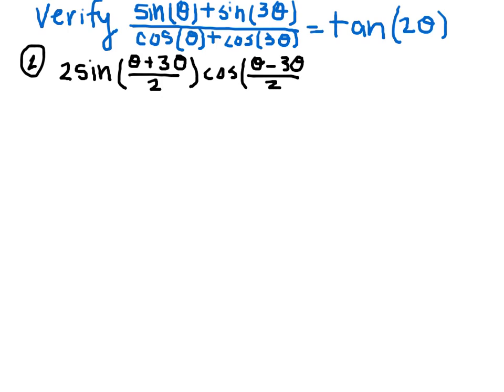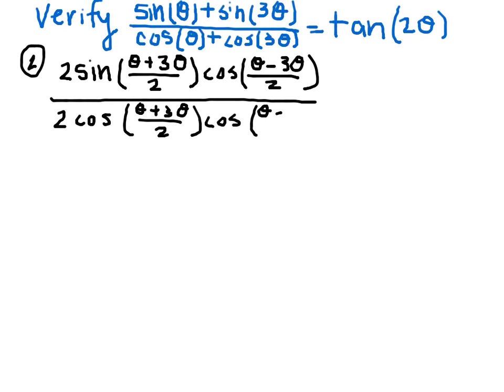divided by 2. That's all going to be divided by the cosine plus cosine, sum-to-product formula, is 2 cosine theta plus 3 theta, divided by 2, times cosine theta minus 3 theta, divided by 2.